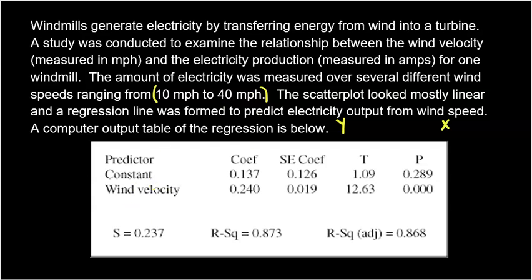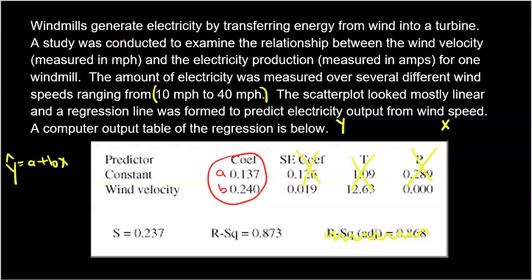This computer output table is essentially a fancy way to give you the equation you need, which is Y-hat equals A plus BX. You're never going to need P, T, or the SE, and sometimes you'll see R-squared adjusted — never use that either. Right next to the word 'constant' or 'intercept' is your A value, and directly underneath that is your slope B. Alphabetical order — you literally cannot mess up the coefficients.